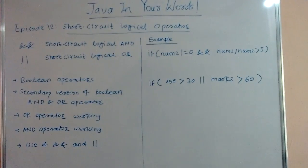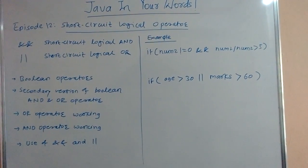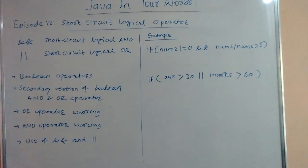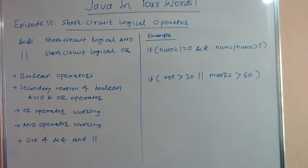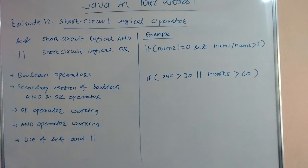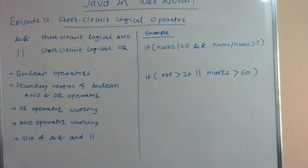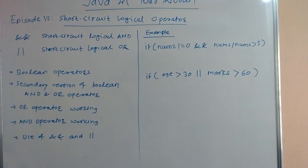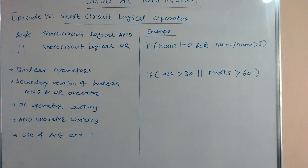These are boolean operators. We are calling these the secondary version of the boolean AND and OR operators. The OR operator results in true if the first expression evaluates to true, no matter what the result of the second expression is. The AND operator results in false when the first expression evaluates to false, no matter what the result of the second expression is.